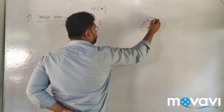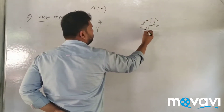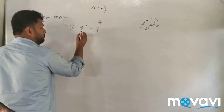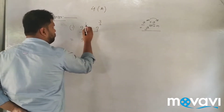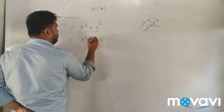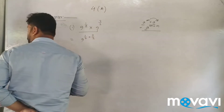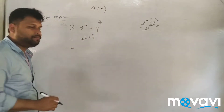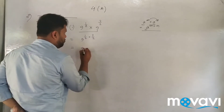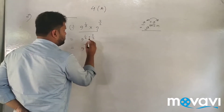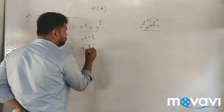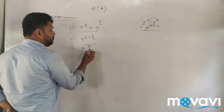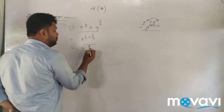So this is 9 to the power of 1 by 2 plus 3 by 2. That is the same base number, 9. We have 1 by 2 and 3 by 2, so the power becomes 1 by 2 plus 3 by 2, which equals 9 to the power of 2.